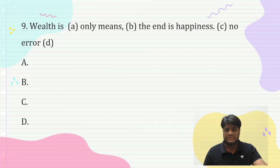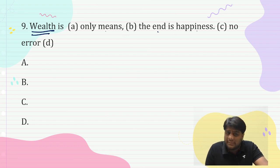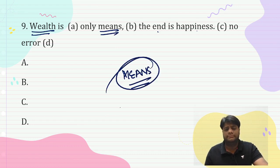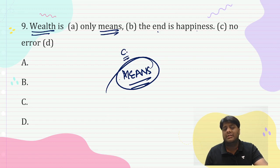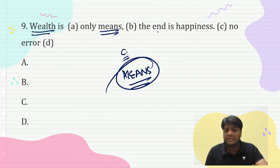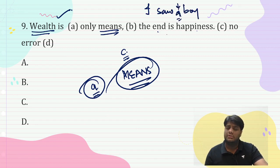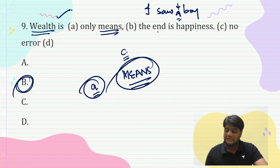'Wealth is only means, the end is happiness.' 'Means' here refers to 'a means' — a way or medium. If you have knowledge of the noun chapter, you know that 'means' requires an article. Just as 'I saw boy' is wrong and 'I saw a boy' is correct, 'only means' should be 'only a means'. Answer is B part.